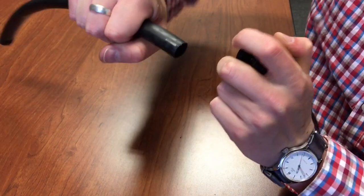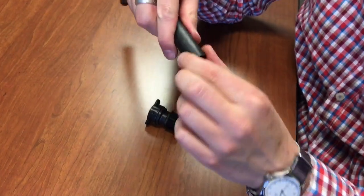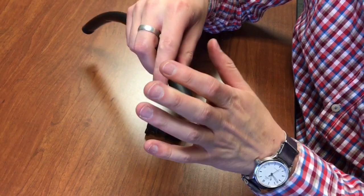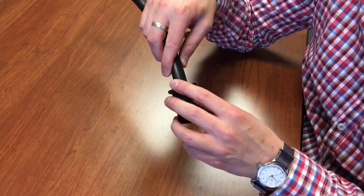and the pipe should come free. Now as you do this over and over, you're going to notice the teeth will grind marks into this. Those shouldn't be a problem if you're installing and removing it just a couple times.